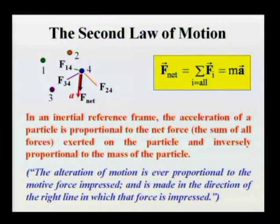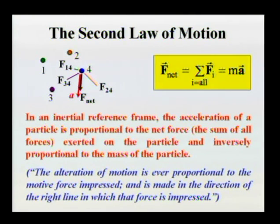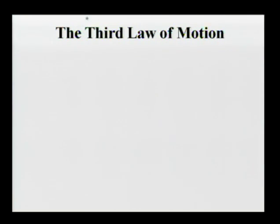Here is the 18th-century version of Newton's second law: 'The alteration of motion is ever proportional to the motive force impressed, and is made in the direction of the right line in which that force is impressed.' Newton wrote these laws before the concept of the derivative was formally introduced — for him, acceleration was not yet defined as a derivative.